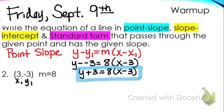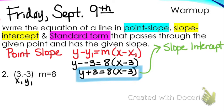So now let's write it in slope-intercept. For slope-intercept, we're going to take this equation, which is y plus 3. Slope-intercept form — you have to solve it for y. So take this equation and solve it for y. That means you have to distribute the 8 and subtract 3, and you'll be in slope-intercept form.